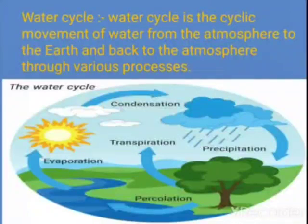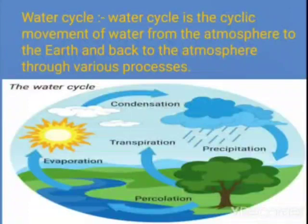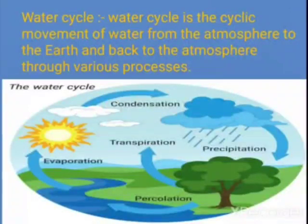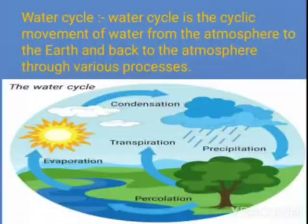Water droplets in the clouds keep bumping against one another and sometimes stick together to form bigger drops. When these drops become too heavy to float in the air, they drop back down to the earth as rain.